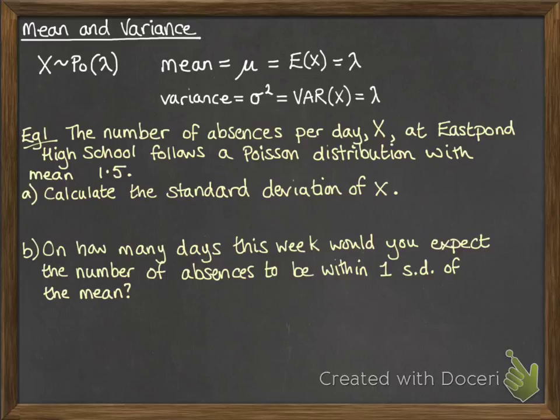We're going to calculate the standard deviation of X. So sigma, that's the standard deviation, that's always the square root of the variance. Now since the variance is 1.5, we need to do the square root of 1.5. So the standard deviation is 1.22.